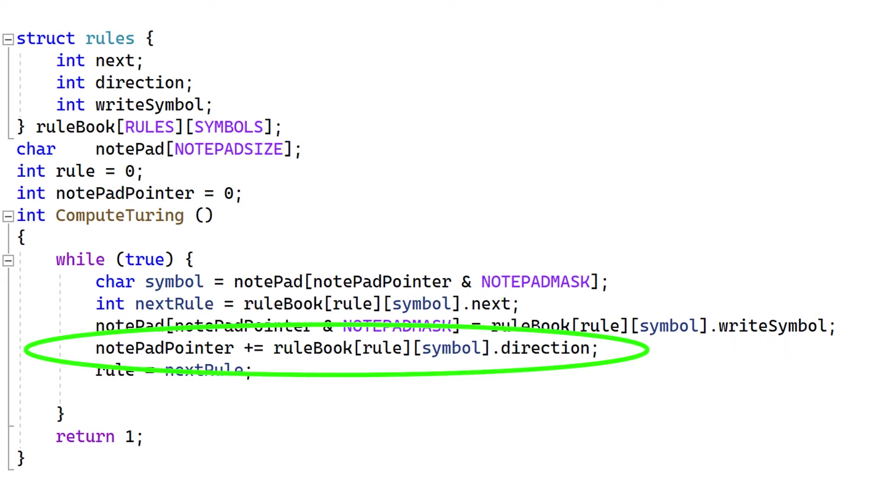We'd move one position left or one position right on the notepad. And then finally, we'd make the next rule the current rule. And we just put this in an infinite loop.